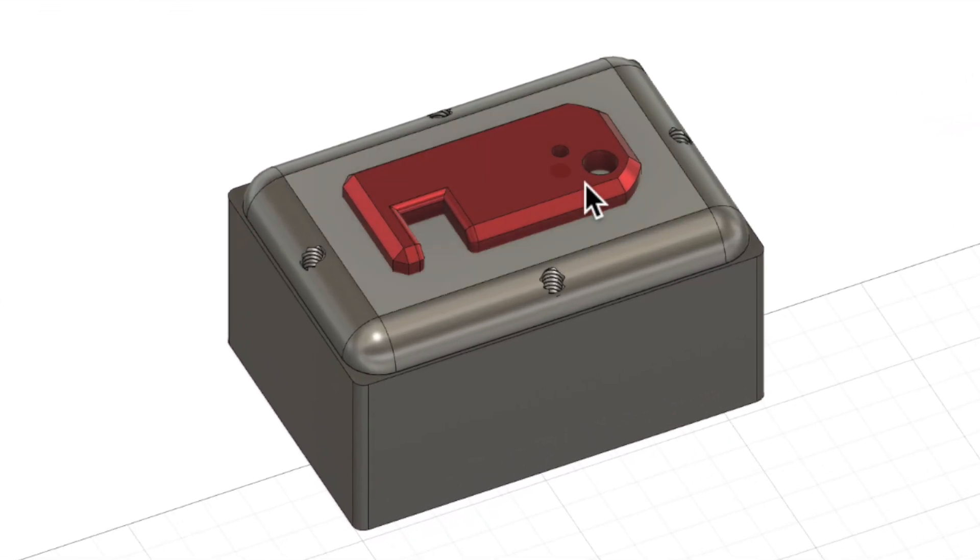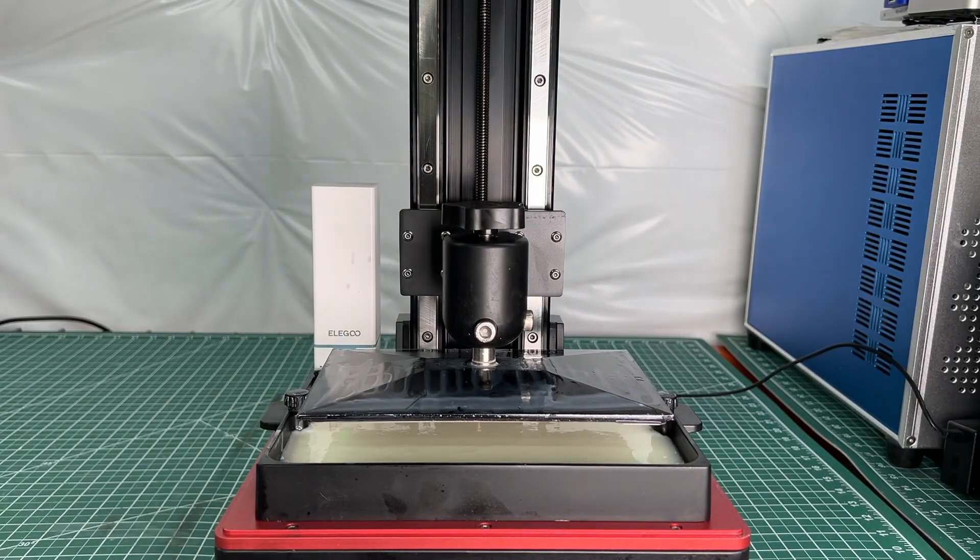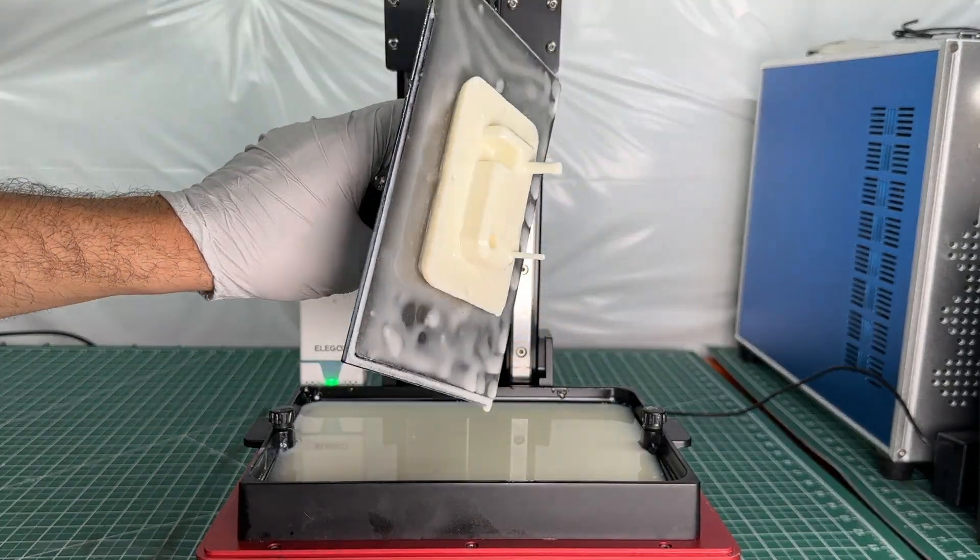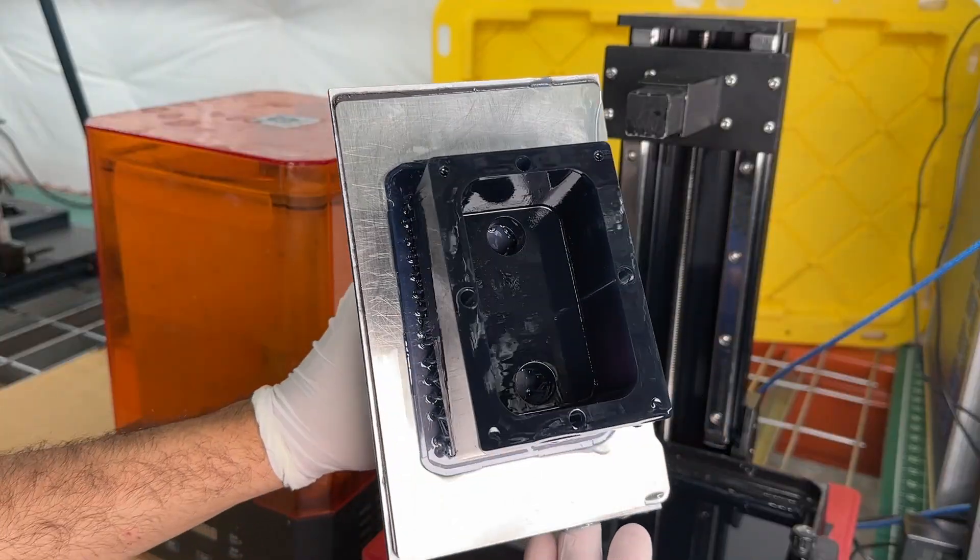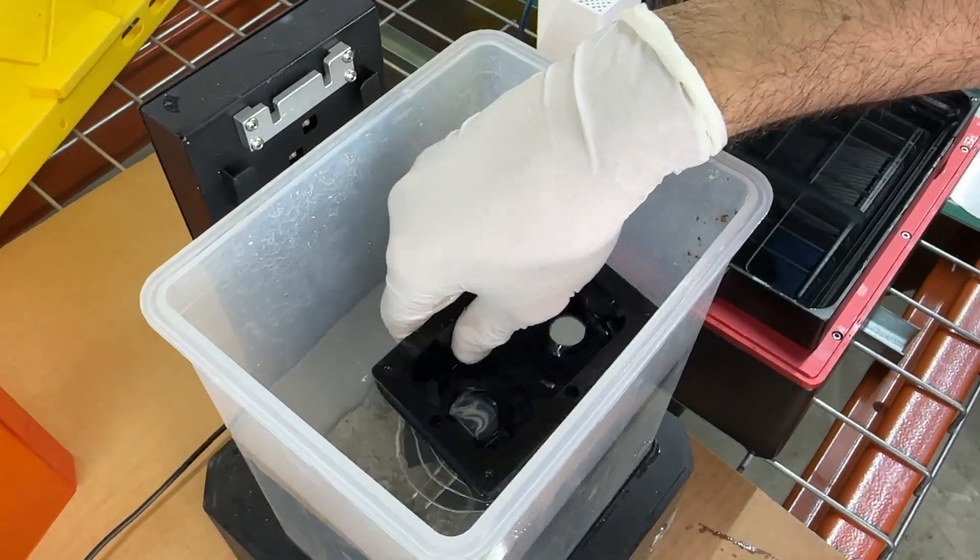These designs are now complete and look good, so we're ready to send them to our Elegoo Saturn S resin 3D printer. Now we start to print and two hours later we have these high resolution plugs for our mold making project. We also print the box on an SLA printer and once done we remove the support structure, clean it, and let it cure.